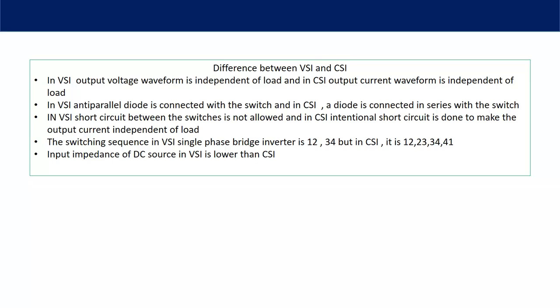In a voltage source inverter, an anti-parallel diode is connected with the switch. But in a CSI, a series diode is connected with the switch.